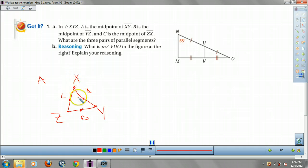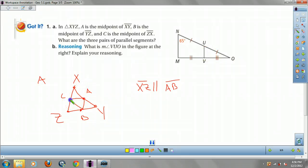What are the three pairs of parallel lines only drawn in? Each midsegment is parallel to the side opposite. So here we have XZ would be parallel to AB. And CB would be parallel to XY.